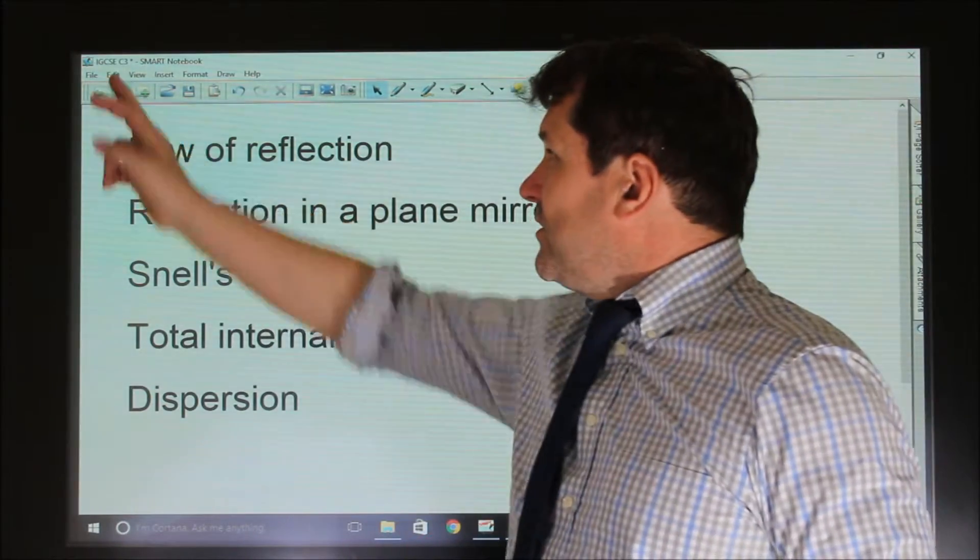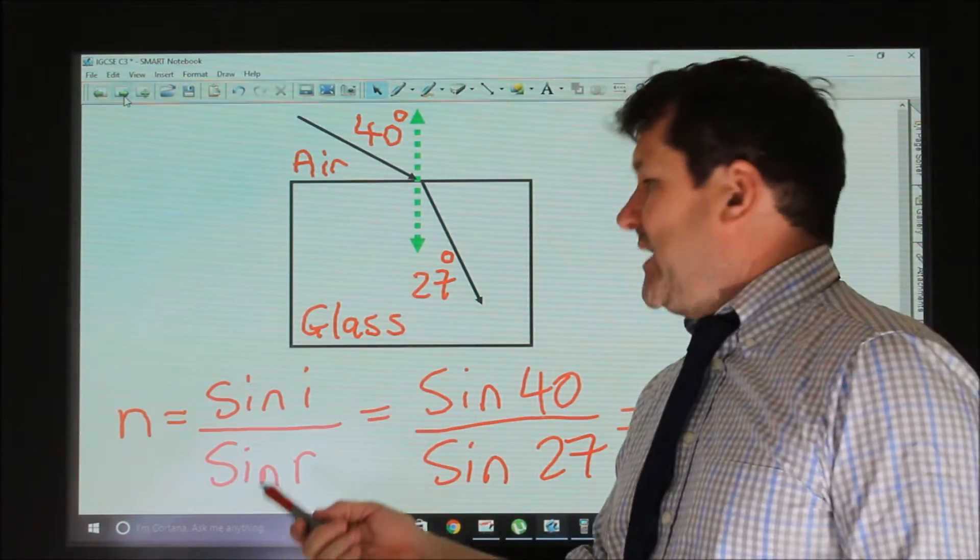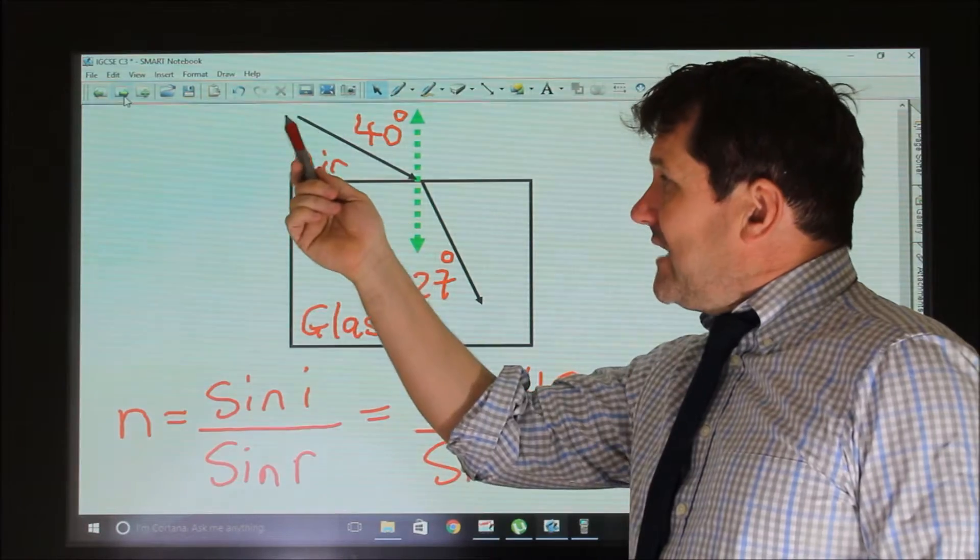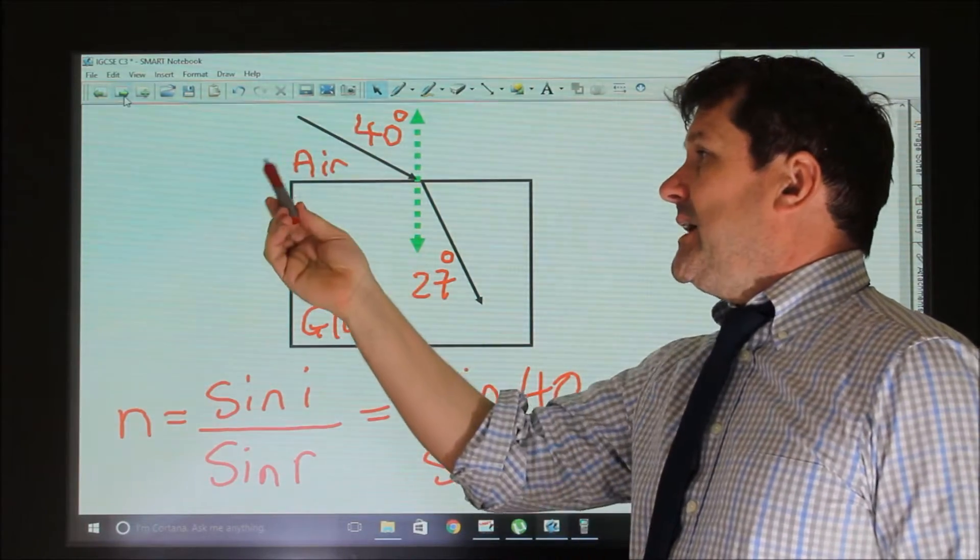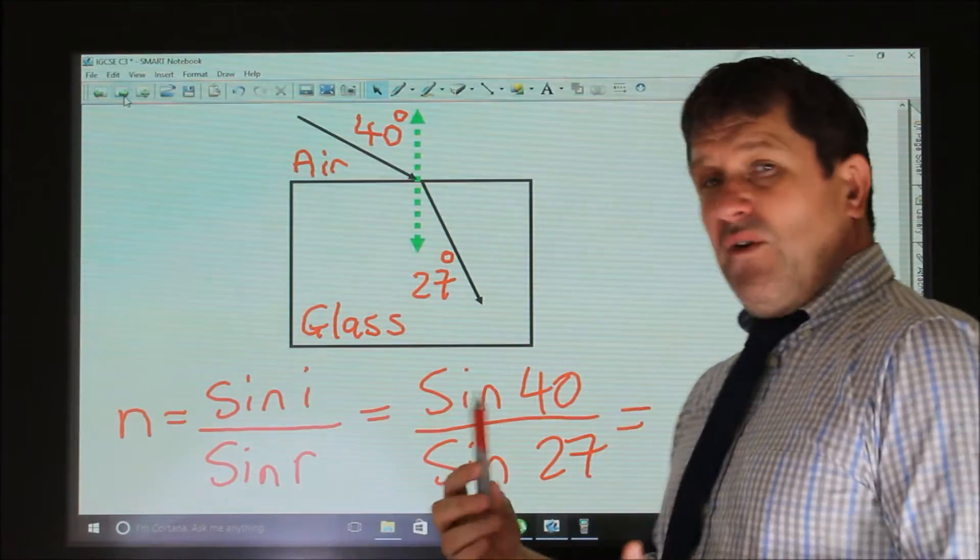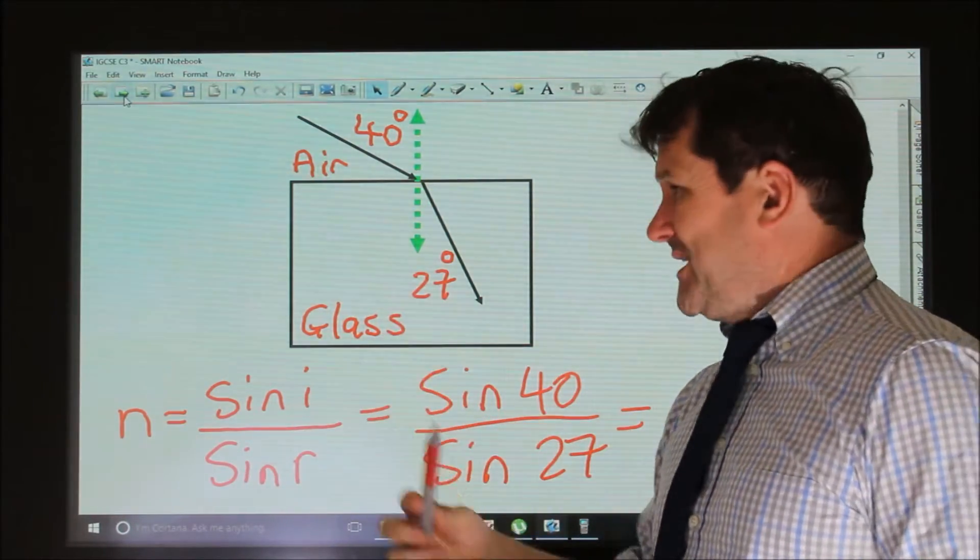So I'm going to move forwards and look at Snell's law, which is more complicated. If we look at Snell's law, for example, when a light ray goes from air into glass, it's entering a more optically dense medium. Therefore it will refract, it will change direction and bend towards the normal as it slows down.